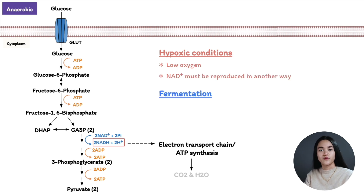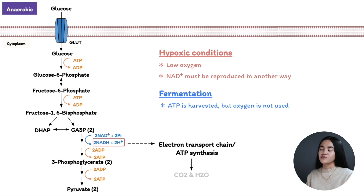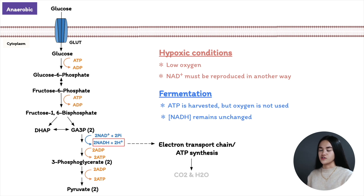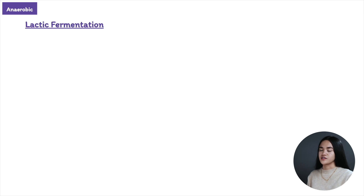That is where fermentation comes in. Fermentation is when energy — ATP — is harvested but oxygen is not being used. Another key point is that the concentration of NAD+ or NADH remains unchanged. We're going to break down two types of fermentation involving pyruvate: lactic fermentation and ethanol fermentation.